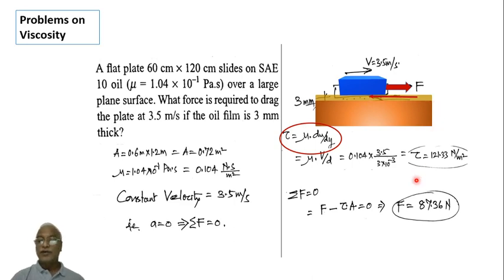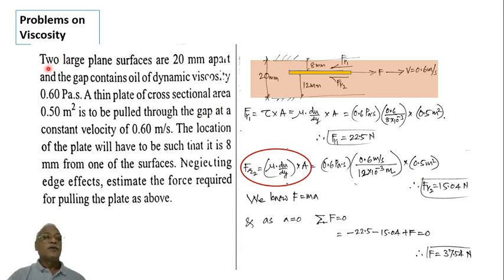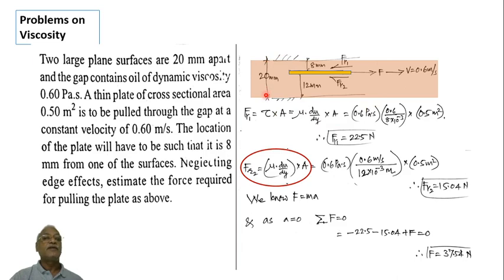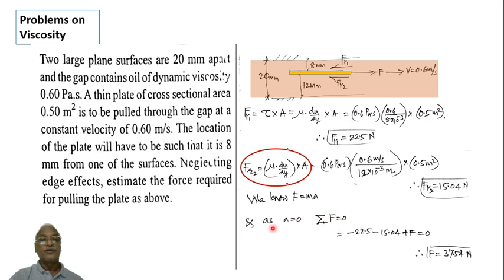The next problem: two large plane surfaces are 20 millimeters apart, and the gap contains oil of dynamic viscosity 0.6 Pascal second. A thin plate of cross-sectional area 0.5 meter square is to be pulled through the gap at a constant velocity of 0.6 meter per second. Since velocity is constant, sigma F equals zero.